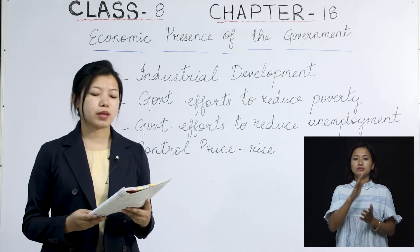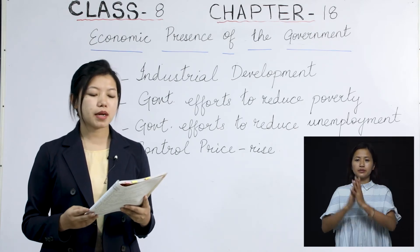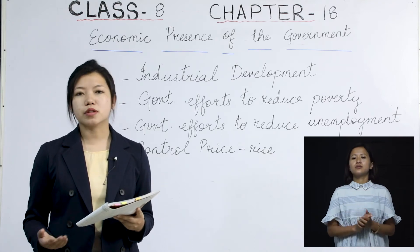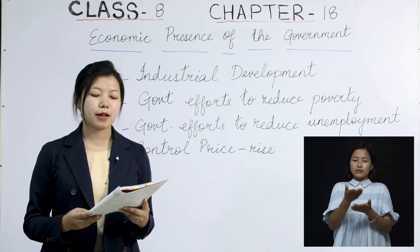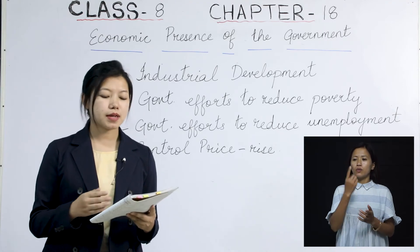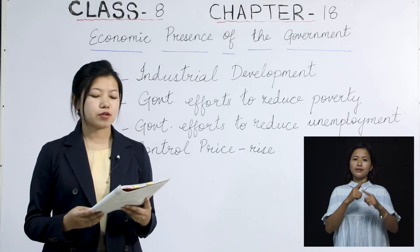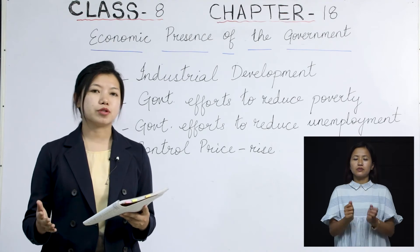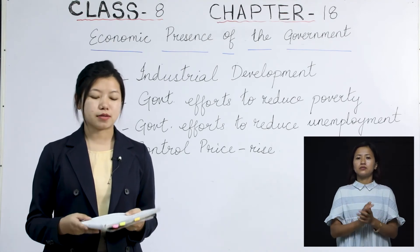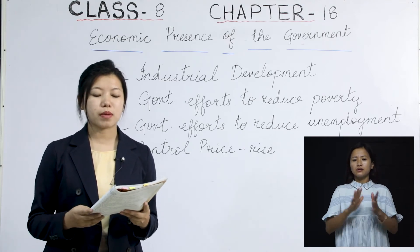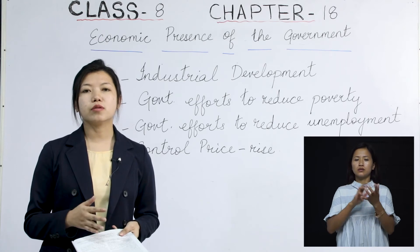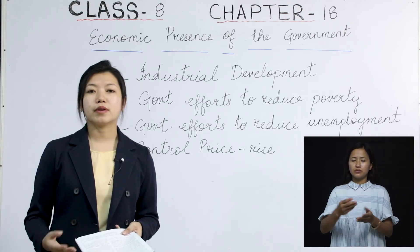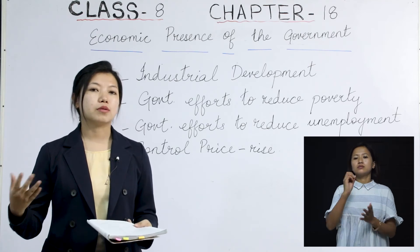To control price rise, the government sometimes resorts to dual marketing, under which certain items like sugar, wheat, and rice are supplied at two points — one at fair price shops and another at fixed rates at general shops at a higher price. This creates a balance in price rise. The government also takes action against hoarders, smugglers, and black marketers — those who buy goods in bulk and sell at very high prices that common people cannot afford.